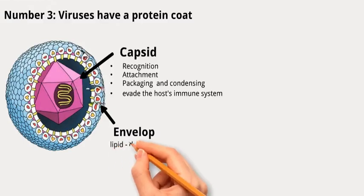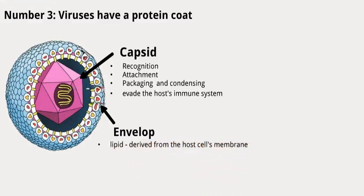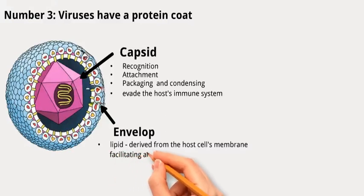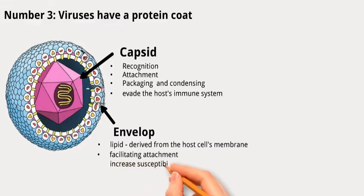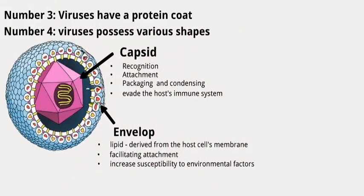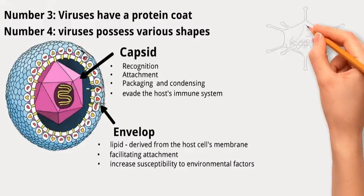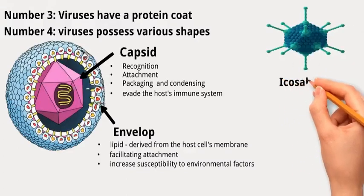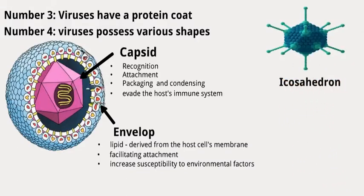Additionally, some viruses have an envelope. The viral envelope is a lipid membrane surrounding certain viruses' capsid protein coat, derived from the host cell's membrane when the virus exits the host cell. The envelope helps the virus infect host cells by facilitating attachment and entry, but also makes the virus more susceptible to environmental factors like drying or heat. Enveloped viruses include HIV, influenza, and herpes viruses.